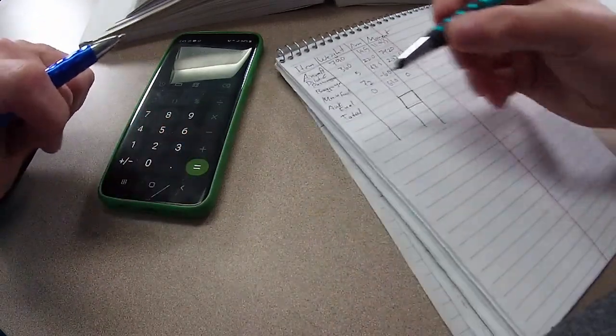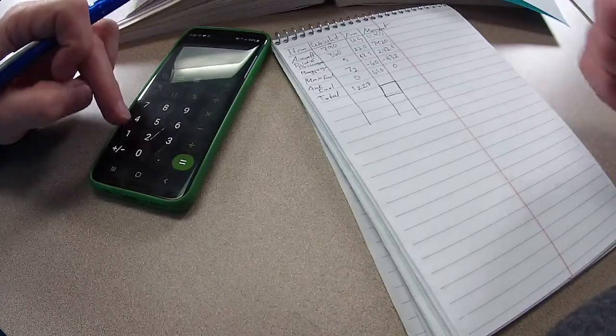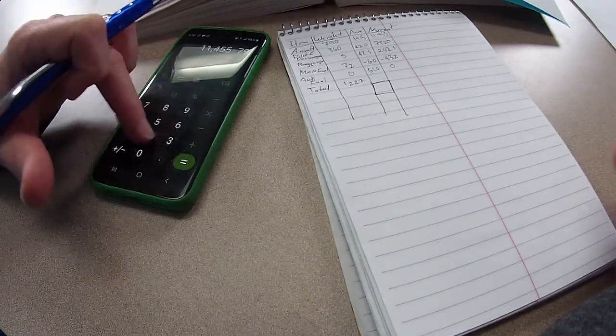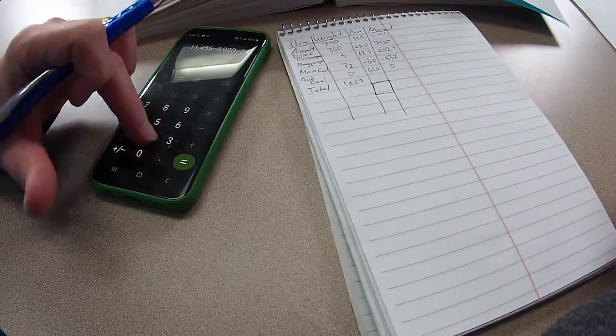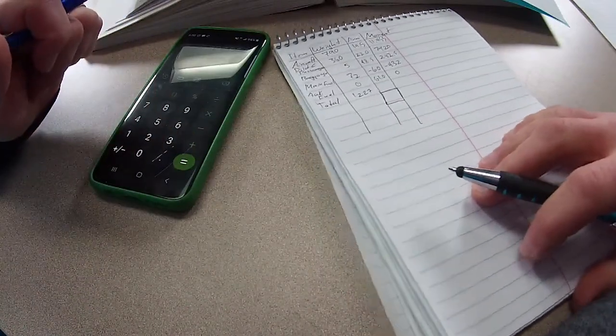This is good news. We've done weight and balances when we've been down at Brooklyn when we've been flying. 1,227 pounds confirms once again that we are below the maximum by 23 pounds. Now we just need to add up our moment. 11,455 plus 7,920 plus 242.5 minus 432 equals 19,185.5.